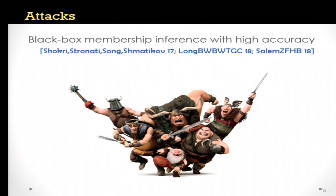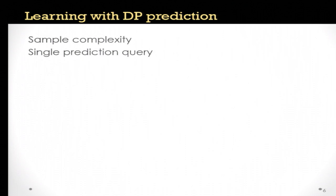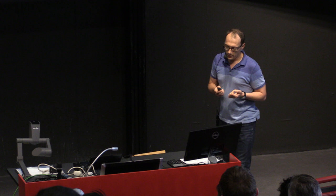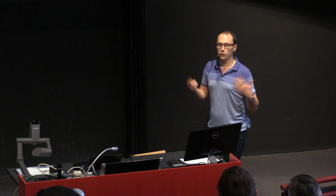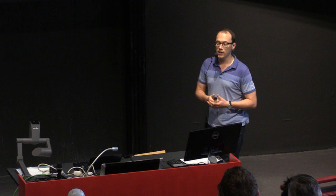So we now have this model and we'd like to say something about it. We'll focus on two specific aspects: first, the sample complexity of these problems, which is the most constrained resource; and second, just answering a single prediction query. If we can do something useful for a single prediction query, we can certainly hope to do more. We can also obtain answers for multiple queries from an algorithm which answers a single query using the standard composition properties of differential privacy.